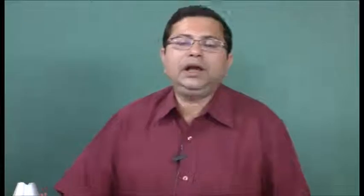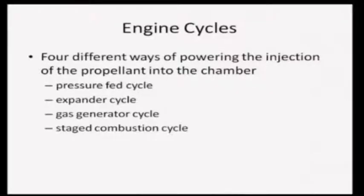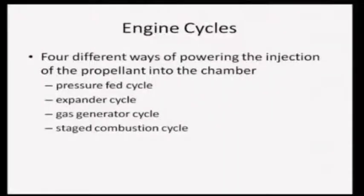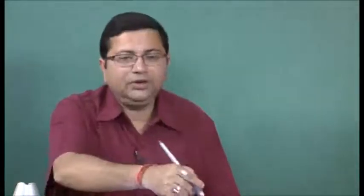Now let us look at how liquid propellant rockets work in reality — we will talk about engine cycles. There are typically four different ways of powering the injection of propellant into the chamber, and these dictate the type of cycle followed: a pressure feed cycle, an expander cycle, a gas generator cycle, and a staged combustion cycle.